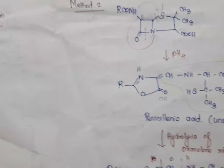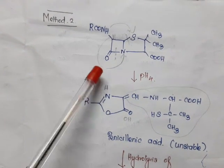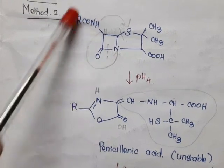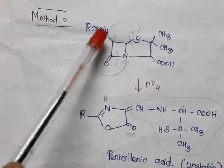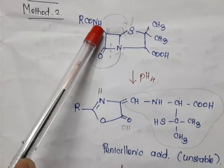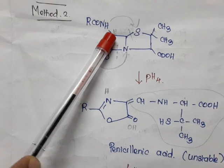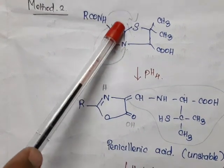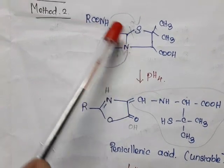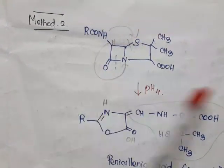Now we will see method 2. In the second method we are using pH 4. What happens here is a shifting of hydrogen from two places. Hydrogen with the nitrogen is shifted from nitrogen to sulfur. In the other portion, CH is present, and this hydrogen is shifted from that carbon to nitrogen. So two hydrogens are changing their positions.